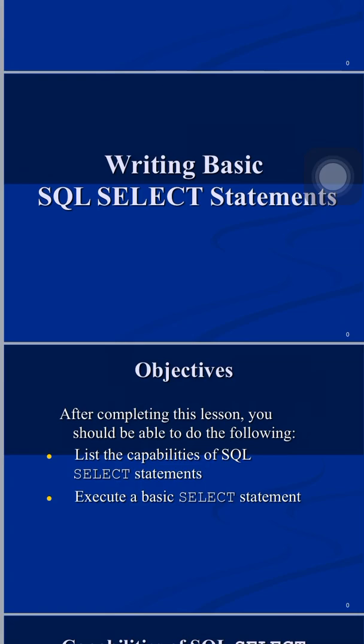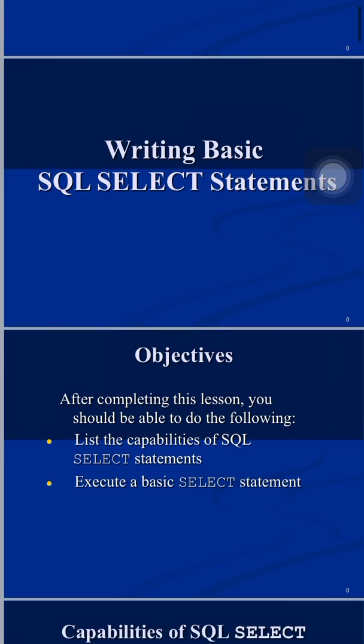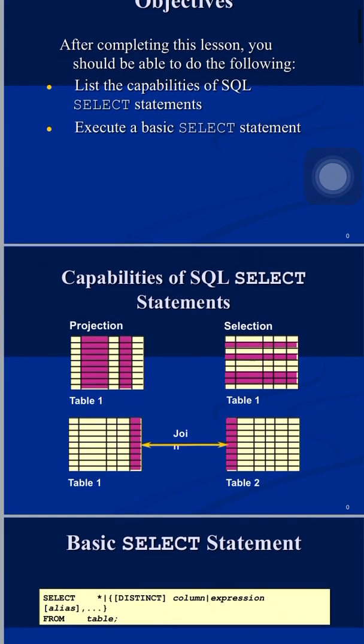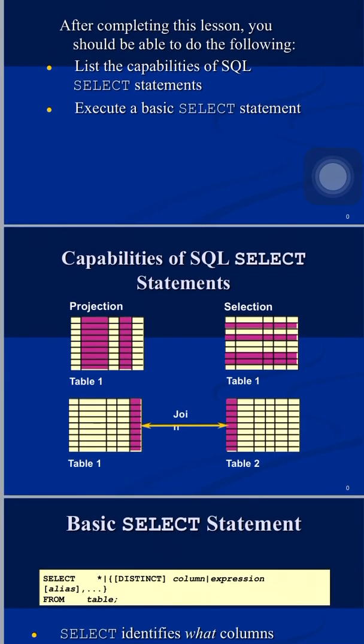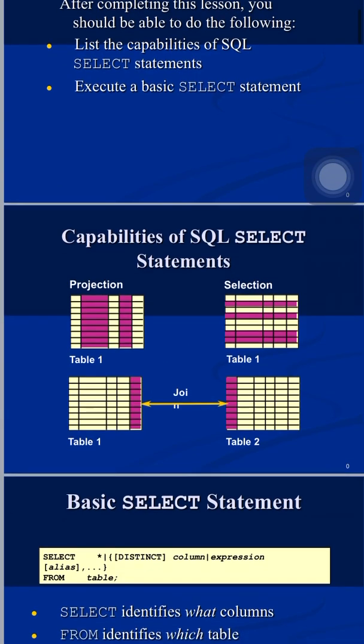Before we start, look at this diagram which helps us understand the capabilities of the SQL SELECT statement. We can do three types of operations: projection, selection, and join. Projection means our focus is towards retrieving data from columns. Selection means our intention is towards looking at particular rows. The diagram highlights columns for projection and rows for selection.